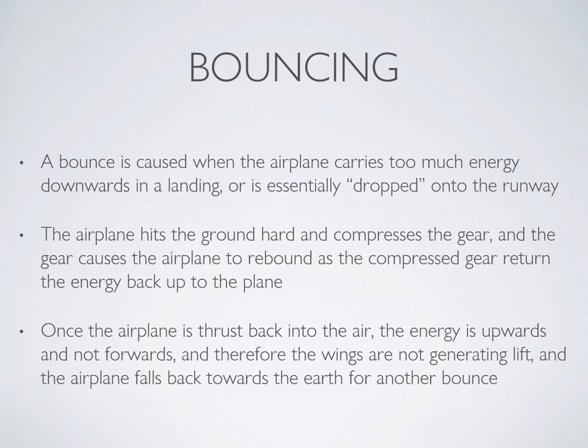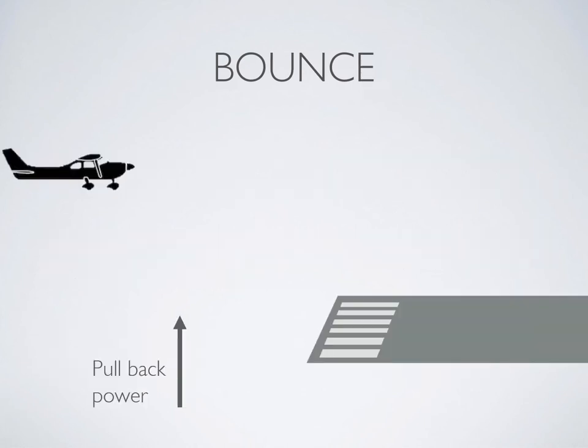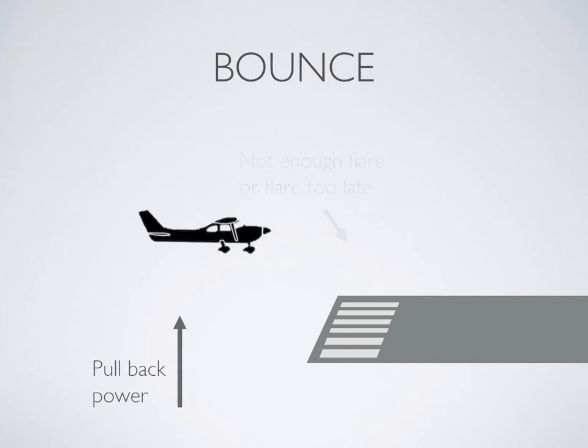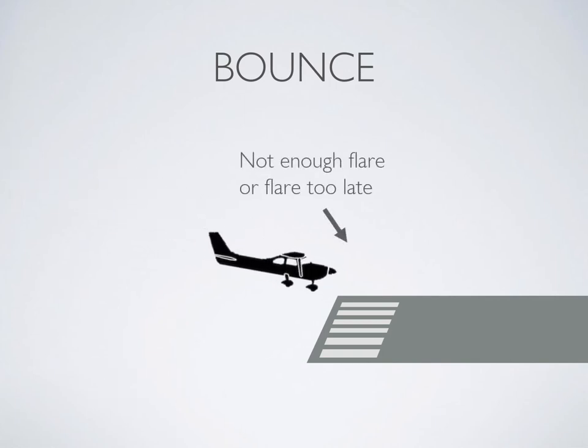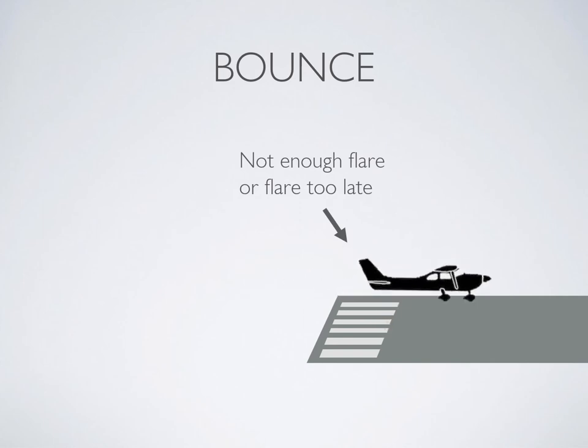Pitching the nose down to try to force the airplane to land will only force it down onto the propeller or nose gear, whereas keeping the nose too high will force it down onto the main gear. Neither option is good. To deconstruct what happens: power removed, airplane comes down, not enough flare or flare too late — the airplane bounces and then falls back to the runway.